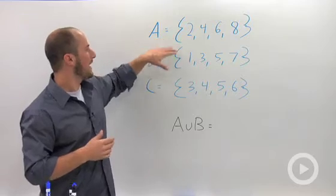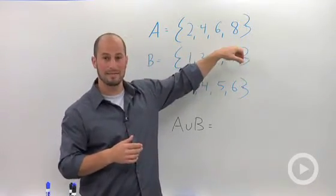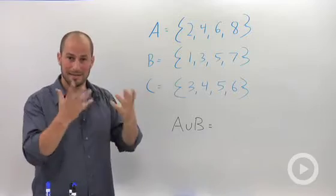Okay, so set A is basically the numbers 2, 4, 6, 8. There's four elements in that set, those four numbers.